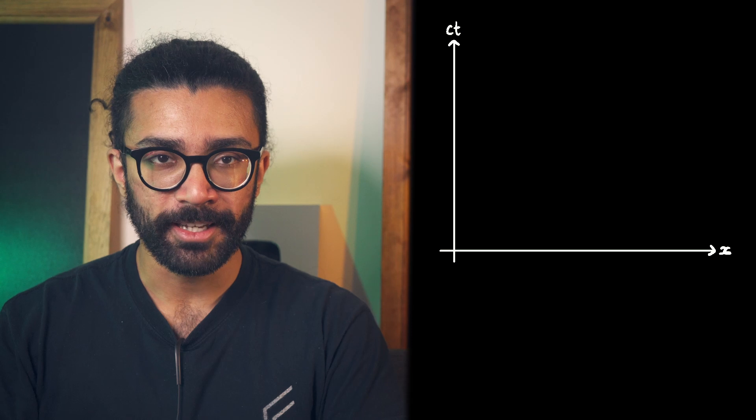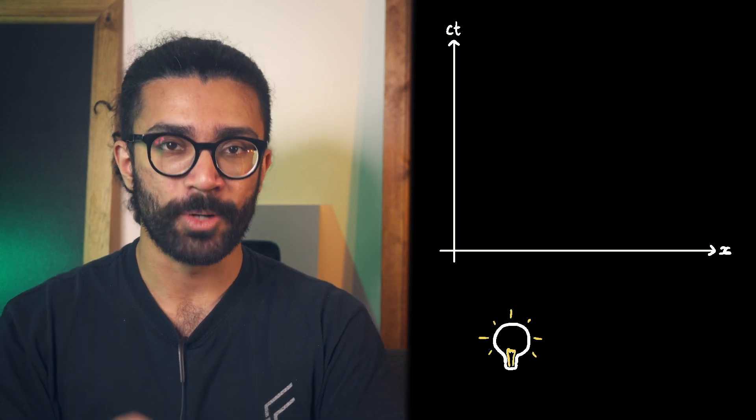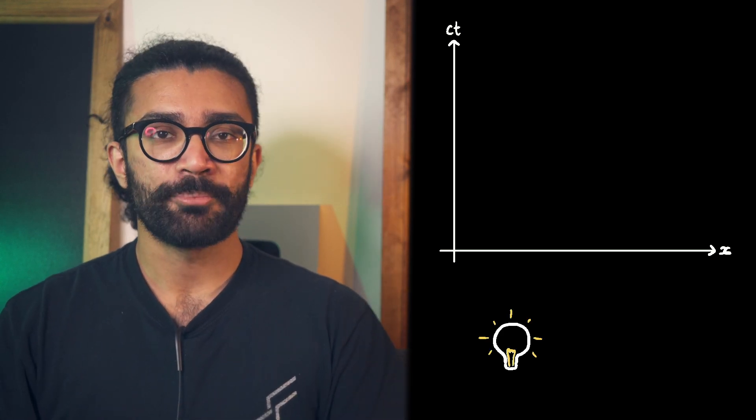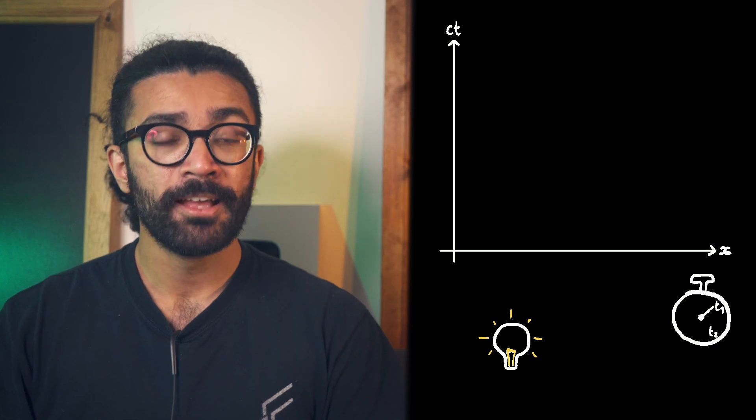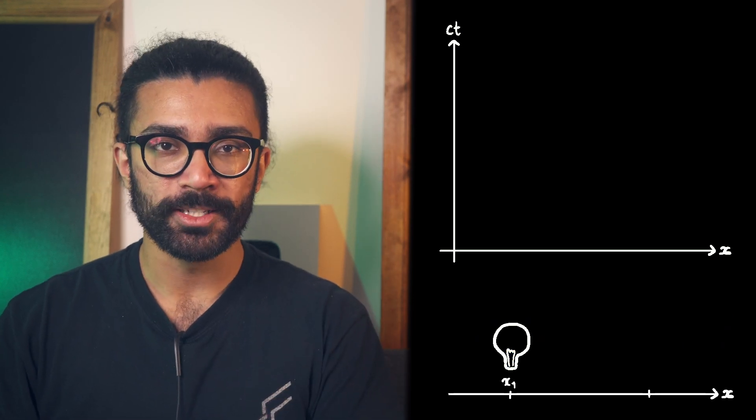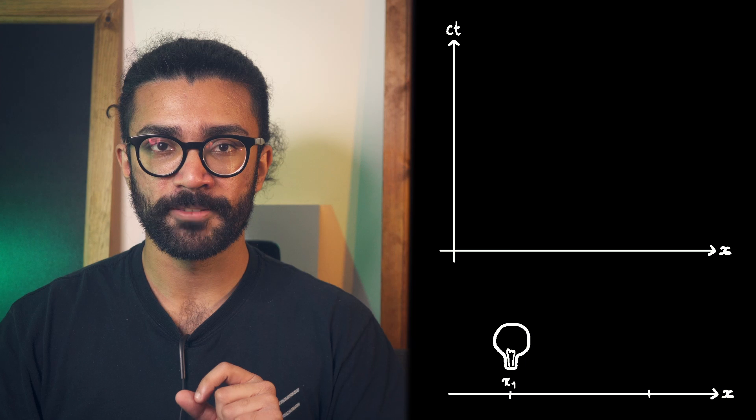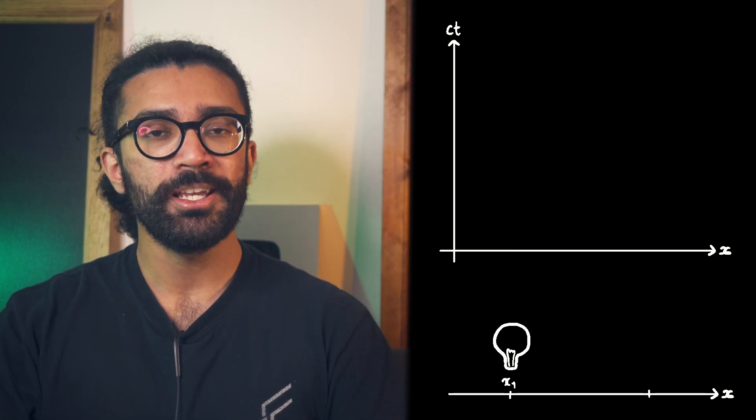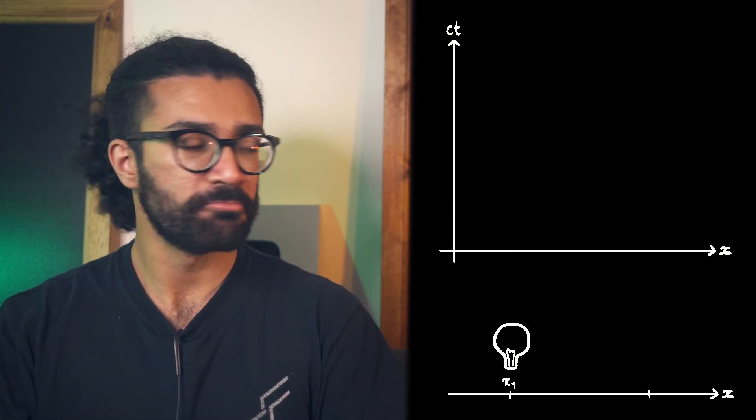Let's say we want to think about an event where a light bulb gets switched on. Let's say this happens at a time T1, and the bulb is at the X coordinate X1 when this happens. On our space-time diagram, we can represent these two coordinates like this.